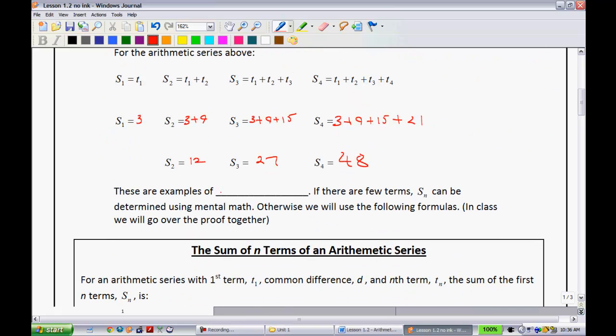And lastly, if we want the sum of the first four terms, we add all four of those terms together. 3 plus 9 plus 15 plus 21, and we get 48. These are all examples of partial sums. We call them partial sums because they're just a part of this series. This series may have more than four terms, three terms, two terms. It's just we found a partial sum.